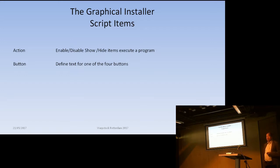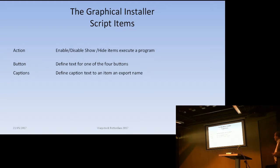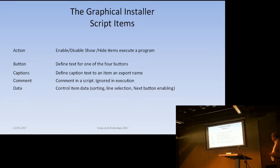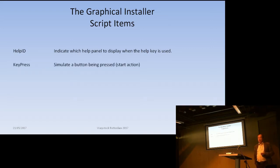'Button' defines the buttons at the bottom — you can define the text which you then see as previous, next, cancel or system management button, and then the help button. Captions, comments, data — these are all the items in the script file. One of the interesting items was 'help ID', because when you press the help button you want to get some information on that page, so the help ID is used to select the particular page in your help file.